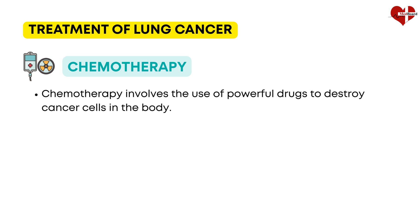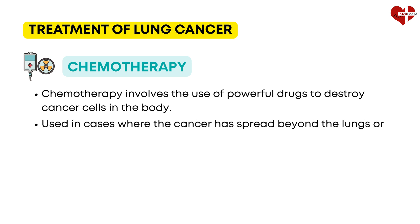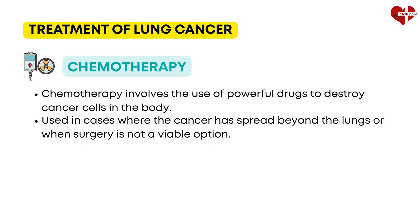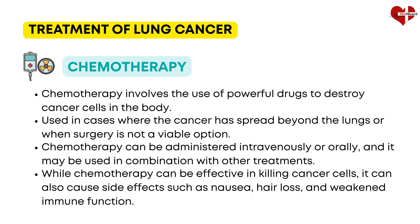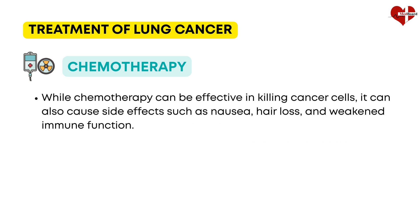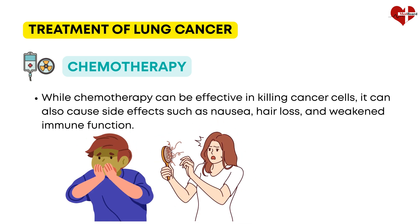Chemotherapy involves the use of powerful drugs to destroy cancer cells in the body. It is typically used in cases where the cancer has spread beyond the lungs, or when surgery is not a viable option. Chemotherapy can be administered intravenously or orally, and it may be used in combination with other treatments. While chemotherapy can be effective in killing cancer cells, it can also cause side effects such as nausea, hair loss, and weakened immune function.